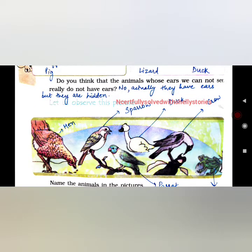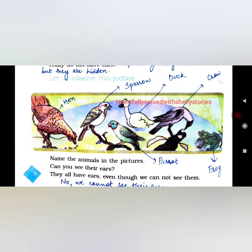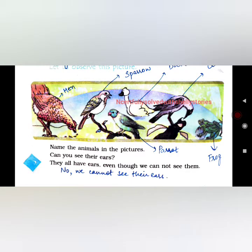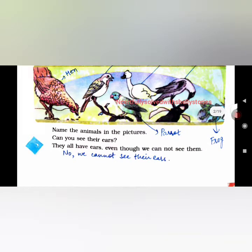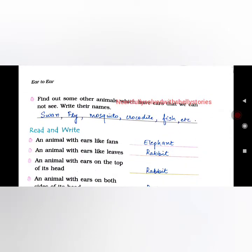Now let us observe this picture. The animals shown are: hen, sparrow, duck, parrot, crow, and frog. Can you see their ears? No, we cannot see their ears. They all have ears even though we cannot see them. Find out some other animals whose ears we cannot see and write their names. They are swan, flies, mosquitoes, crocodiles, and fish — you cannot see their ears.